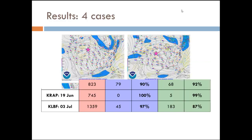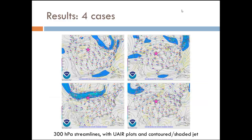We decided to look at it from a synoptic perspective to see if we could start finding an environment where this type of thing is happening. Looking at 300-hectopascal streamlines, upper air plots, and the shaded jet, you're really not seeing a pattern — it could be anything from slight ridging to a shortwave trough to zonal flow. Moving to 500 millibars looking at heights, upper air plots, and contoured temperature, same story — anything from ridging to gradual southwest flow to a shortwave trough. Not seeing a pattern at the mid-levels or upper levels.